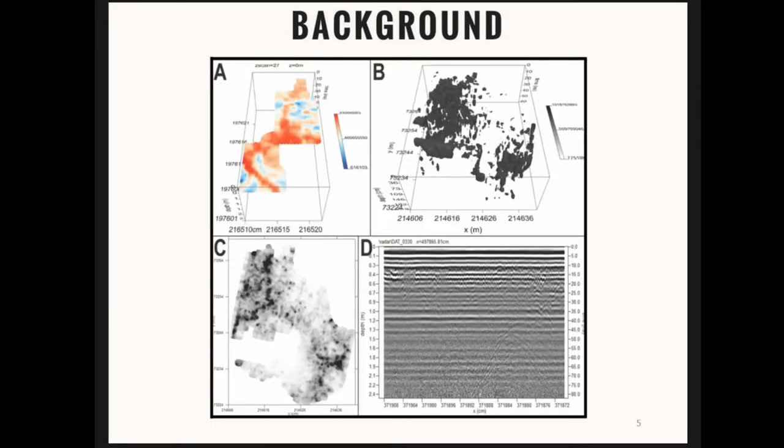This is what you can get your radar data to look like. You have your time slices, your 3D blocks, your animations, your isosurfaces, and your radargrams. At the minute, my automation is focusing on the 2D data, sort of like remote sensing data, but I'm hoping to move into full 3D blocks and isosurfaces as well.